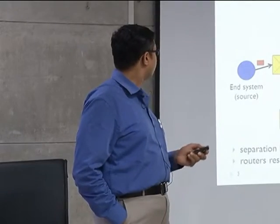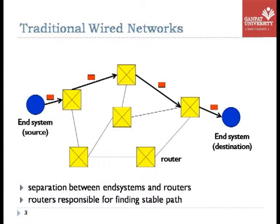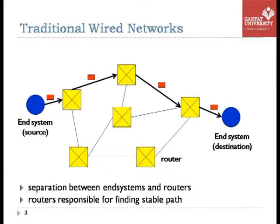Let's look at the slide showing a traditional wired network. In the traditional wired network, we have end-to-end connection. If a packet is sent from the source, it takes the route marked with the dark arrow and reaches the destination. There is a clear separation between the end system and the routers. The router is responsible for searching the path and telling the packet which is the next hop to take from source to destination.